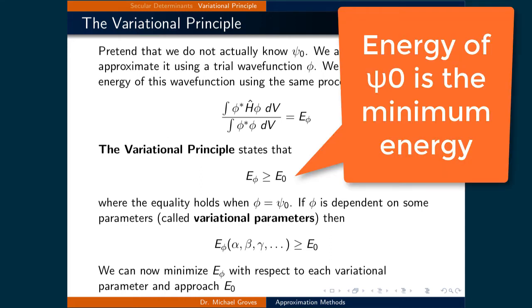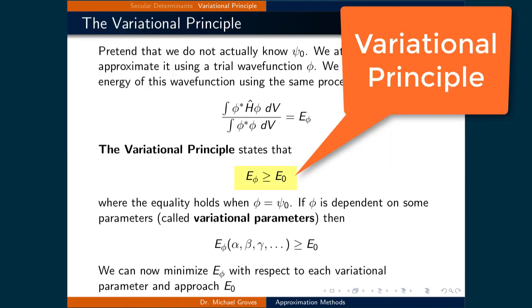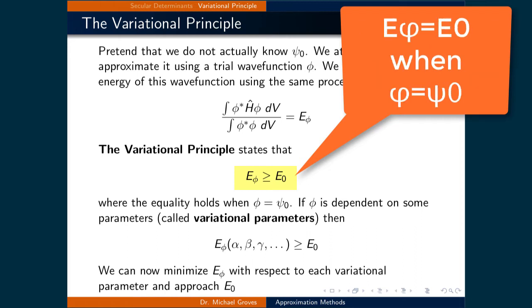Since the ground state energy is the minimum energy of a given quantum system, the ground state energy must be less than or equal to the energy of the trial wave function used to approximate the actual wave function. This relationship is called the variational principle, which states that E_phi is greater than or equal to the true ground state energy E0. The equality holds when the trial wave function phi equals the actual wave function psi0.